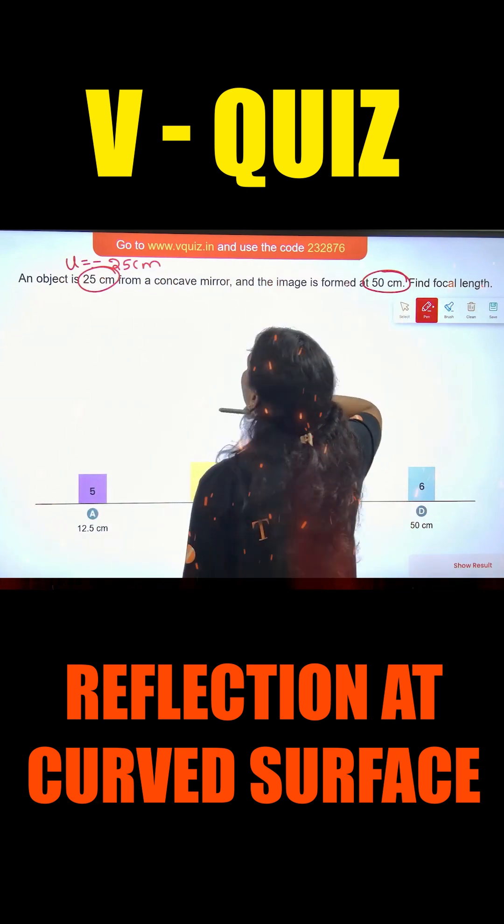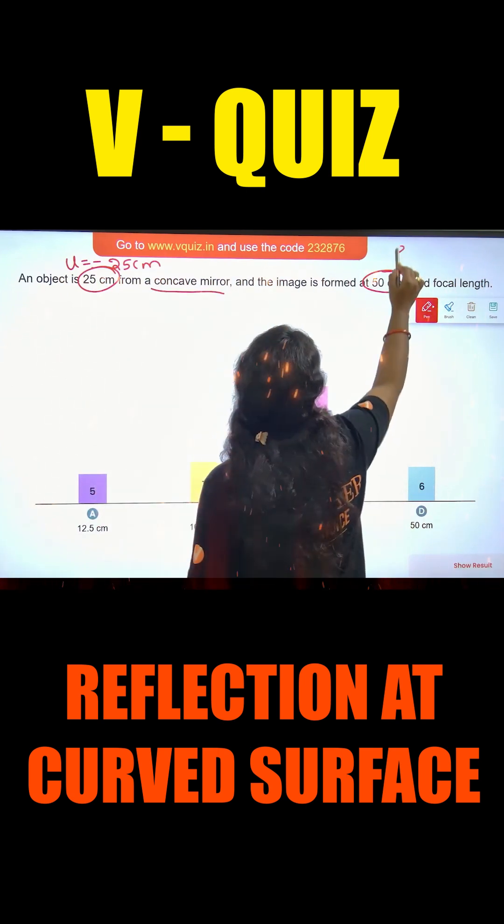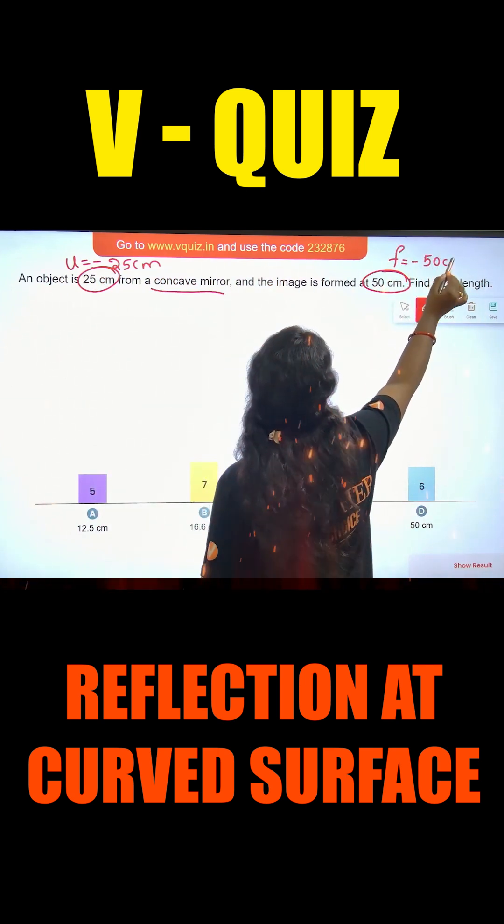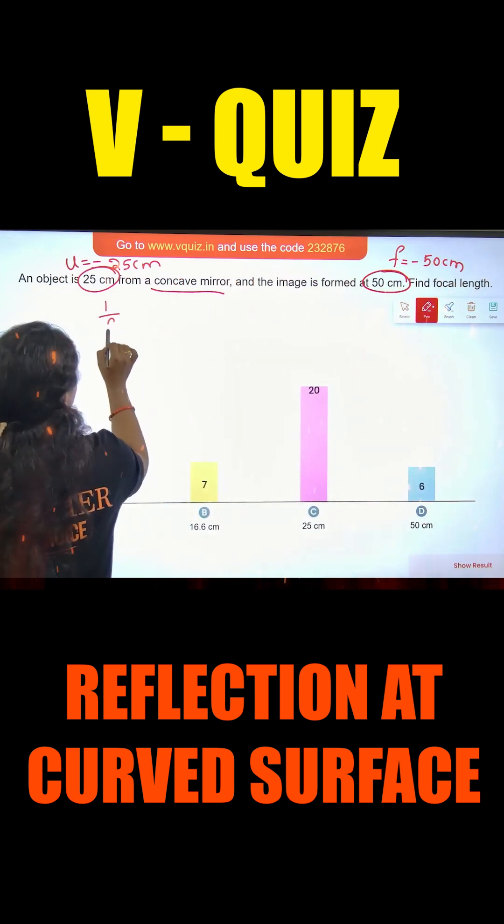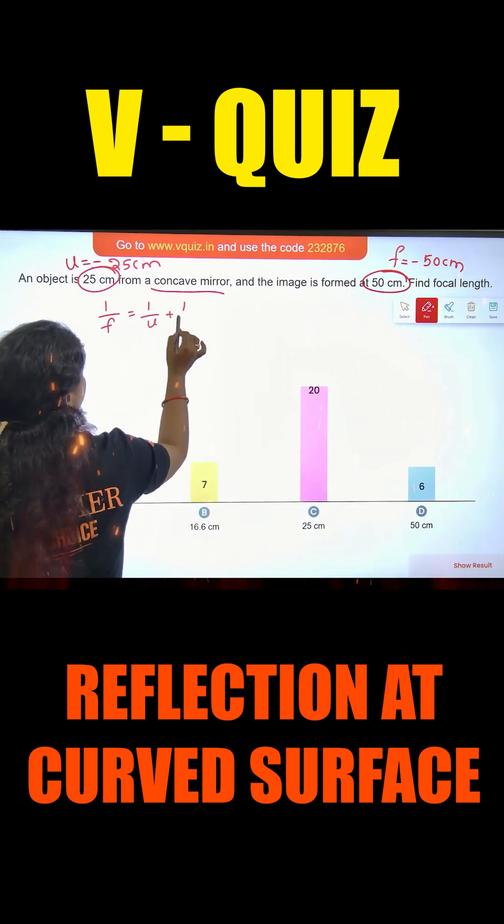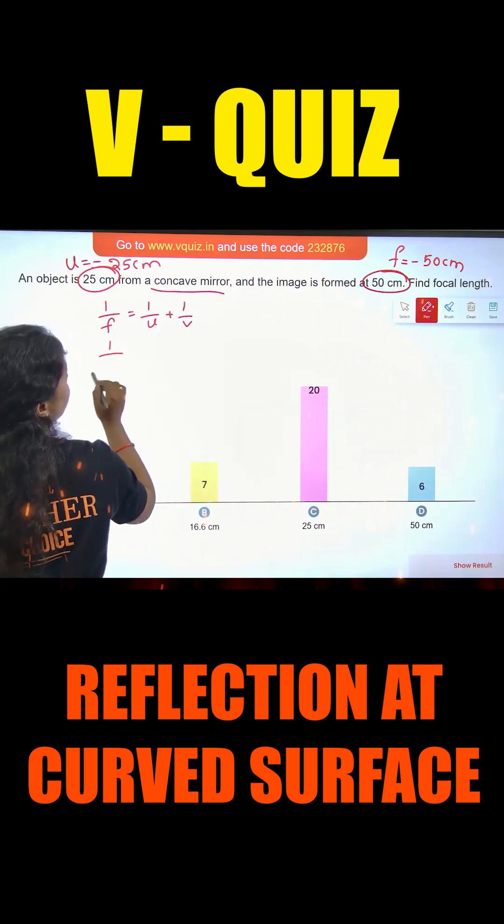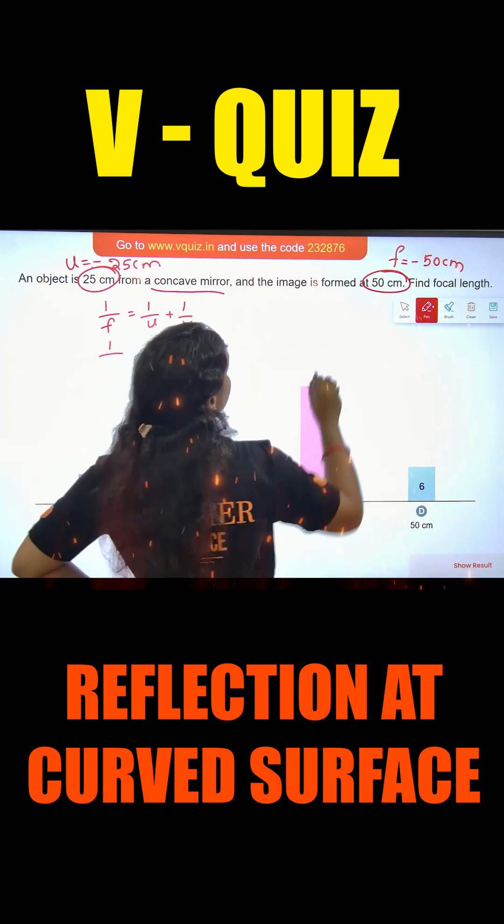If we have focal length of the mirror, the focal length is minus 50 cm. 1 by F is equal to 1 by U plus 1 by V, right? We have to find focal length—sorry, here is V, it is V.